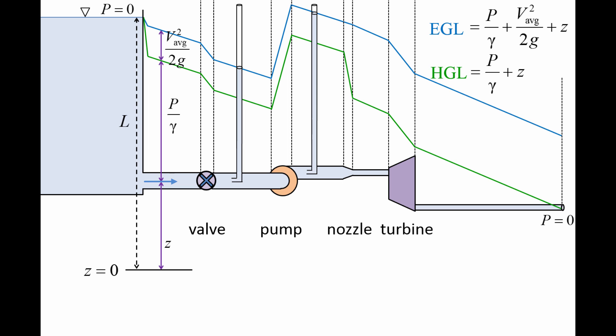In this example, the HGL and EGL curves are shown as changing sharply when encountering a new device. In reality, the shape of the curves will be smoother. However, this example does show the general behavior of the HGL and EGL curves.